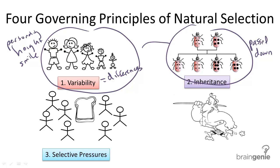The next principle of natural selection is called selective pressure. This is the idea that populations can exceed their resources — so there's too many people for this one piece of bread — and thus overpopulation can lead to competition, so fighting between these organisms, or in this case these little stick figures. And so there's what's called selective pressure.